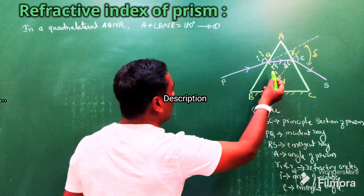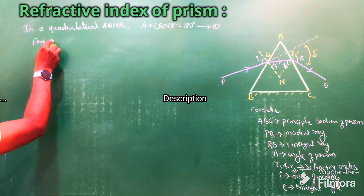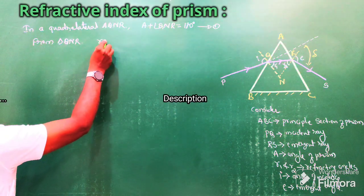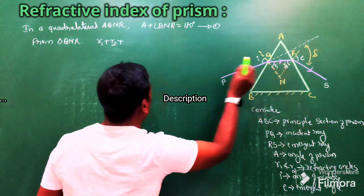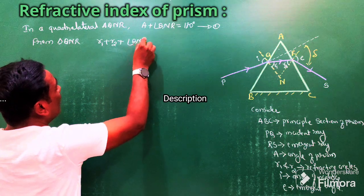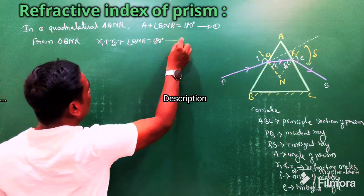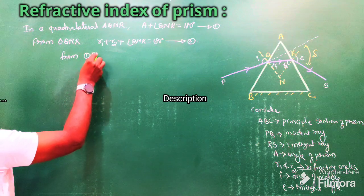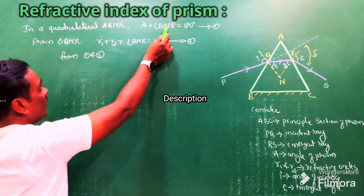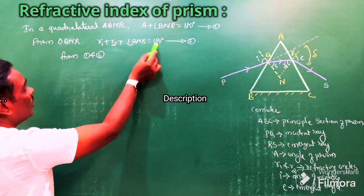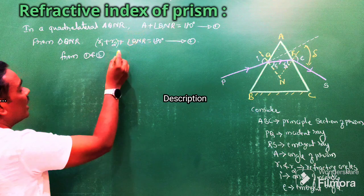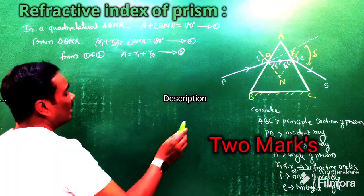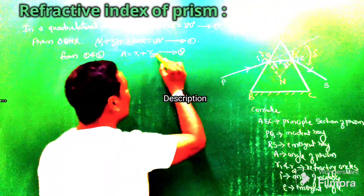From triangle QNR, the sum of all three angles is 180 degrees, so r1 plus r2 plus angle QNR equals 180 degrees — call this equation number two. From equations one and two, since both equal 180 degrees with angle QNR, it follows that A equals r1 plus r2. This is equation number three: the angle of the prism equals the sum of the two refracting angles.